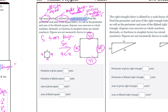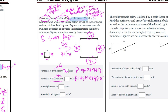For the given (original) square, the perimeter is 9 plus 9 plus 9 plus 9, which equals 36. For the dilated (new) square, the perimeter is 45 plus 45 plus 45 plus 45, which equals 180. We can verify this because 36 times the scale factor of 5 equals 180.